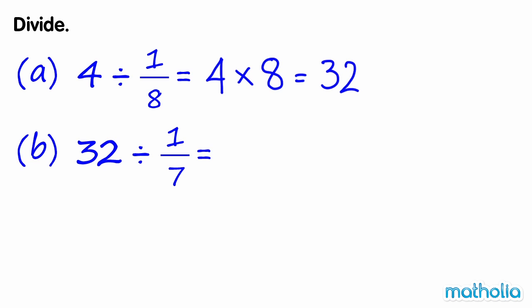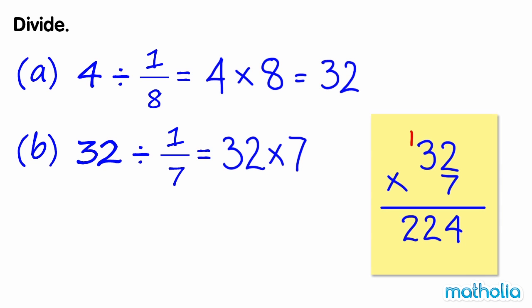B. Thirty-two divided by one-seventh is equal to thirty-two times seven, which equals two hundred and twenty-four.